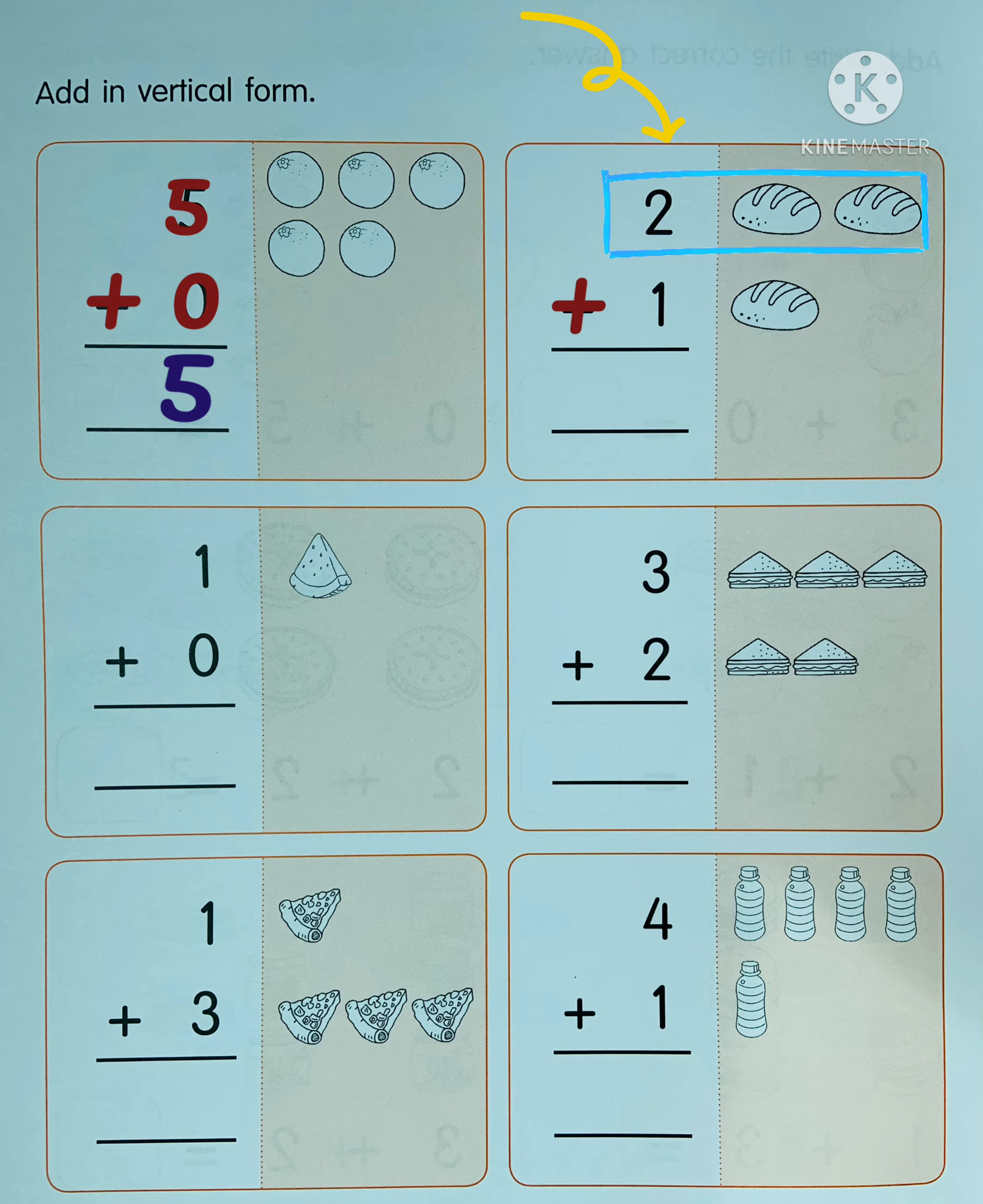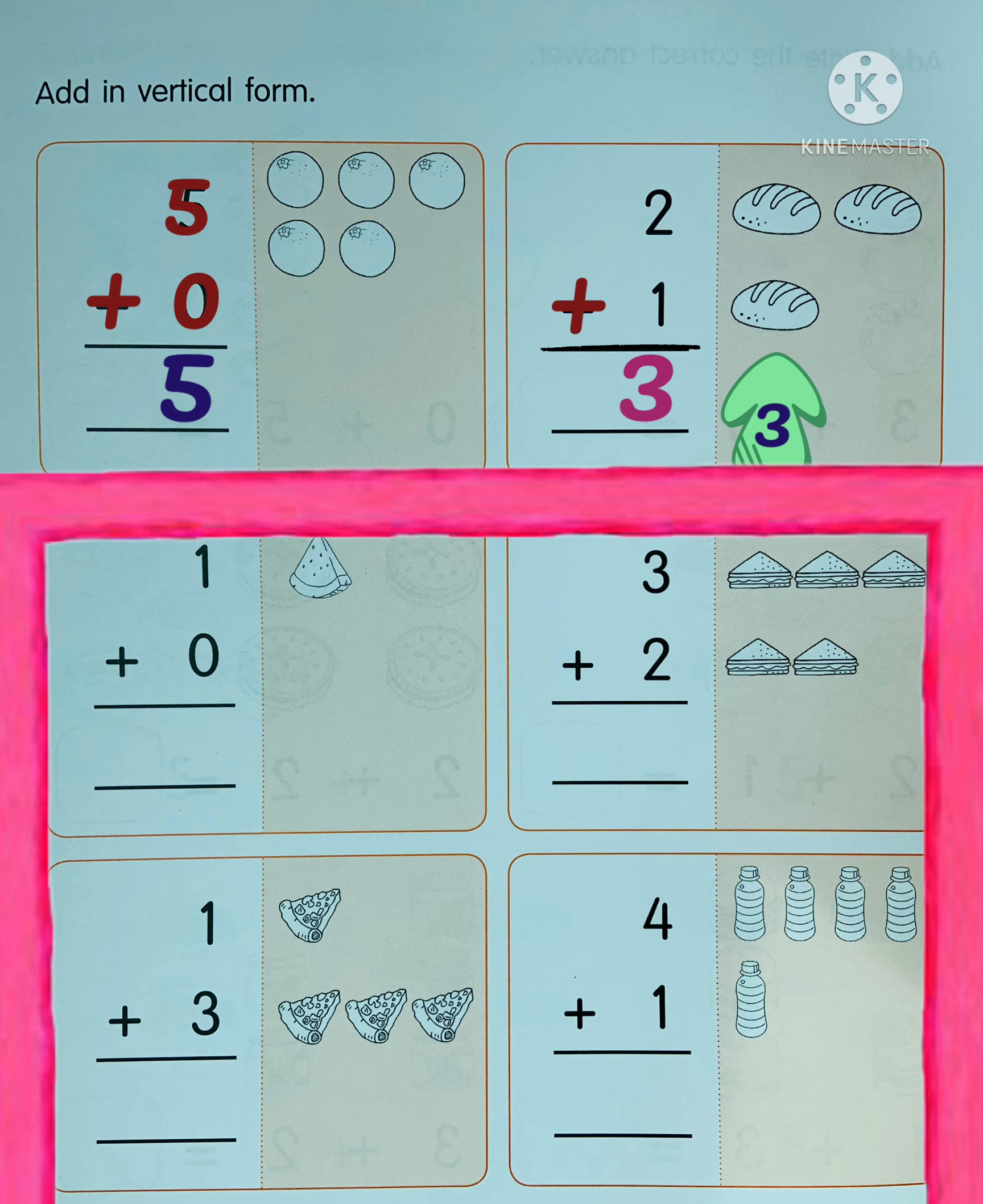On to the next item. Two breads plus one bread equals... count all of these breads: one, two, three. There are three breads, right? Number three. Please answer all of the remaining items.